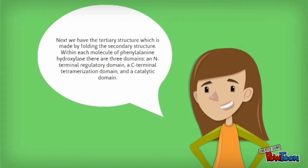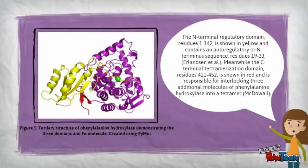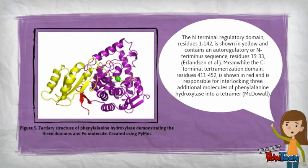Next, we have the tertiary structure, which is made by folding the secondary structure. Within each molecule of phenylalanine hydroxylase, there are three domains: an N-terminal regulatory domain, a C-terminal tetramerization domain, and a catalytic domain. The N-terminal regulatory domain, residues 1 through 142, is shown in yellow and contains an auto-regulatory or N-terminus sequence, residues 19 through 33. Meanwhile, the C-terminal tetramerization domain, residues 411 through 452, is shown in red and is responsible for interlocking three additional molecules of phenylalanine hydroxylase into a tetramer.